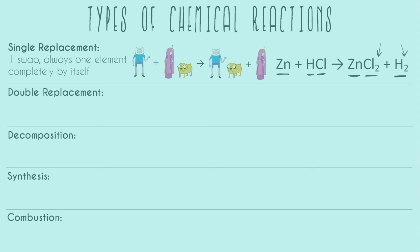Next, let's do double replacement. The definition is that there are two swaps. How you tell the difference between single and double is that there's never an element completely by itself in a double replacement reaction.